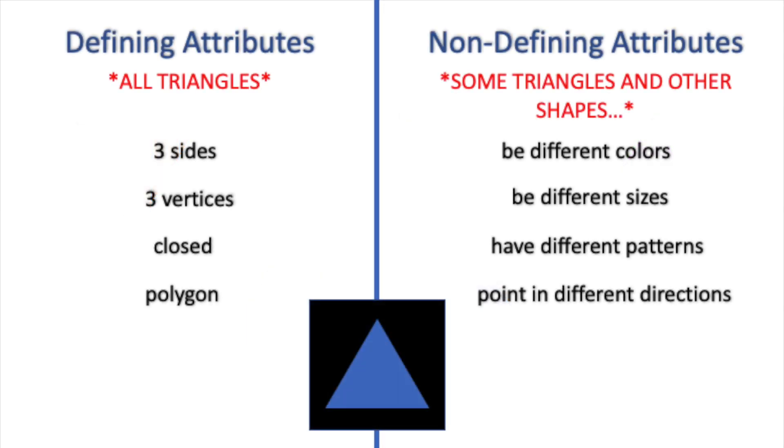So for the non-defining attributes, we can say that some triangles and other shapes can be different colors, different sizes, have different patterns, and point in different directions.